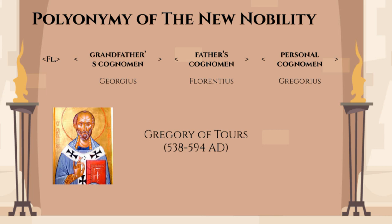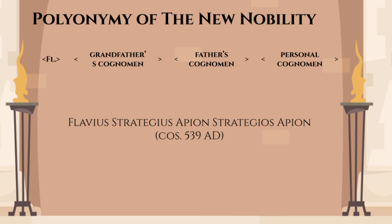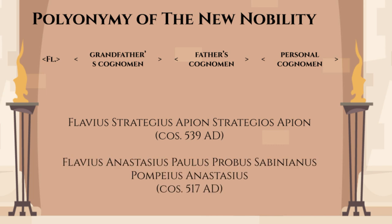This practice, combined with the tradition of naming sons after grandfathers, obviously resulted in some repetitions. It didn't take long for this system to produce a Flavius Strategius Apion Strategius Apion, the consul for 539 AD. However, as silly as this name may sound, at least it is easy to decipher. This can't be said about a name like Flavius Anastasius Paulus Probus Sabinianus Pompeius Anastasius, the consul of 517. He was a grand-nephew of the emperor Anastasius, but the other four of his names can't be attributed without knowing the exact genealogy. Seems like figuring out ways to give yourself a ridiculously long name is a very popular Roman noble custom.